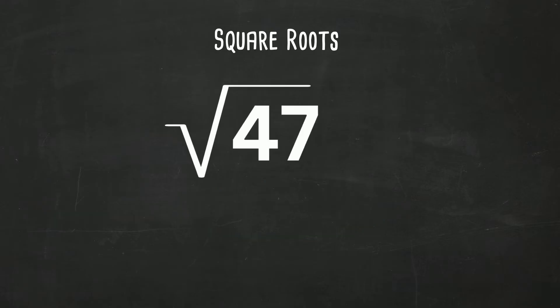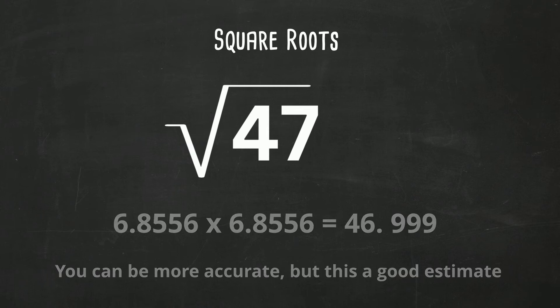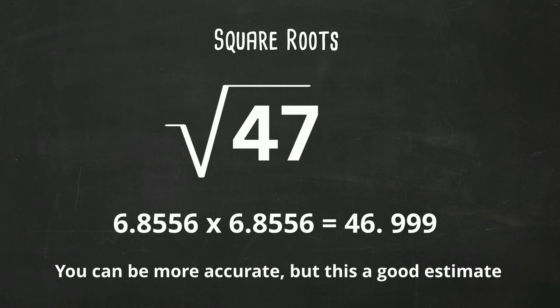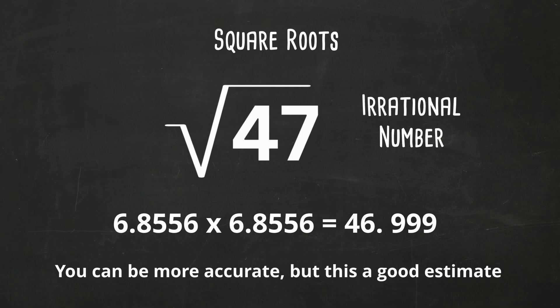How about the square root of 47? It is not a perfect square. The closest you can get — you can estimate it — is 6.8556 times 6.8556, and that equals 46.999. It's close, but it's not 47, so it is an irrational number.